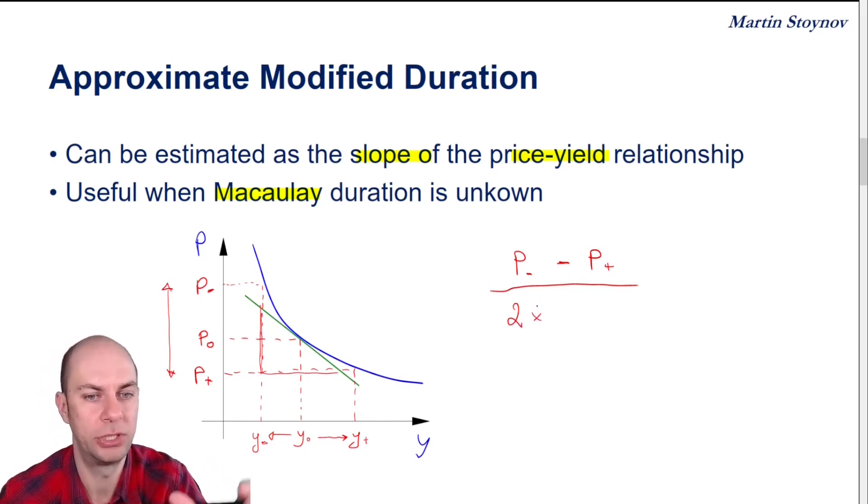The reason why I've got this number 2 is because I'm taking an average. Remember that I went left and right around the current yield value in order to get a more accurate approximation. So I'm taking an average here.